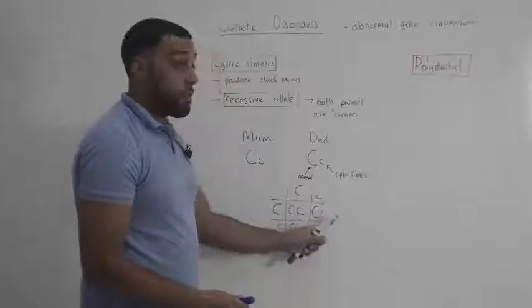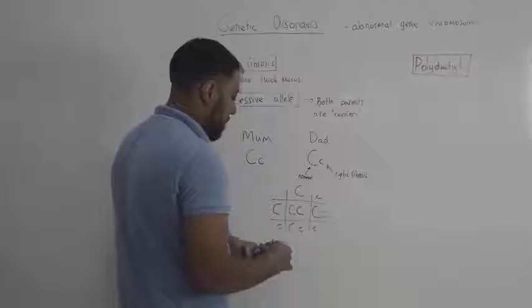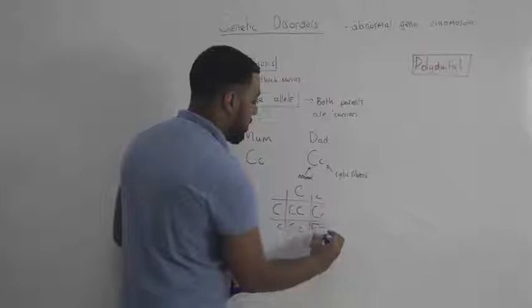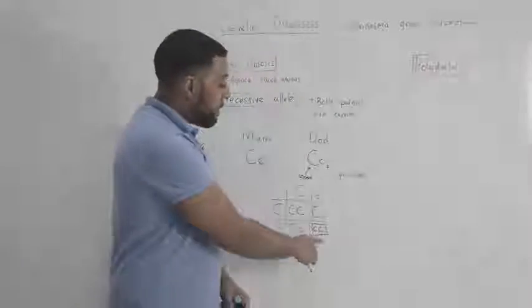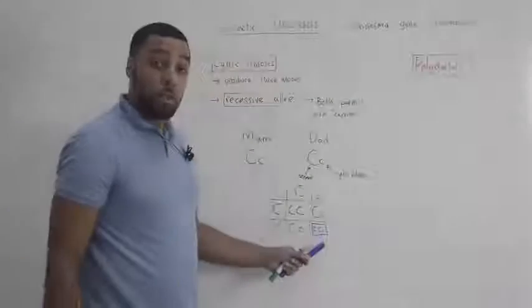Now this fourth child here, both of their alleles are recessive. That means that this child here will have cystic fibrosis.